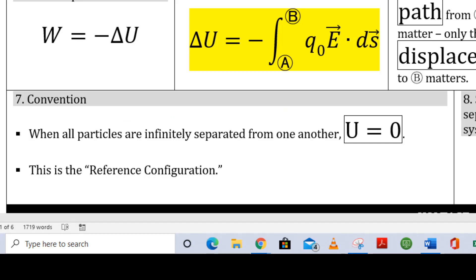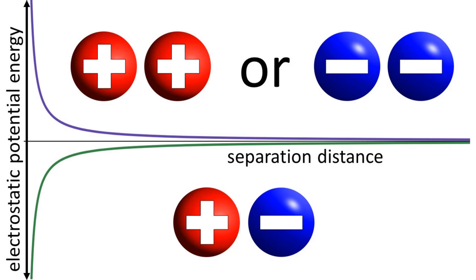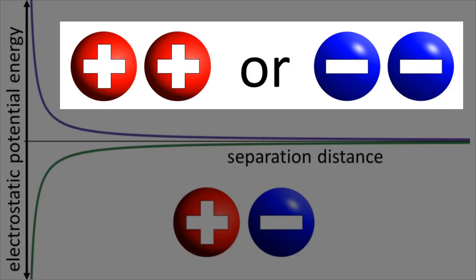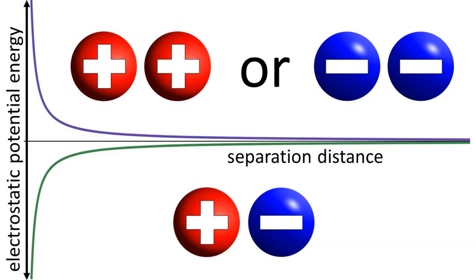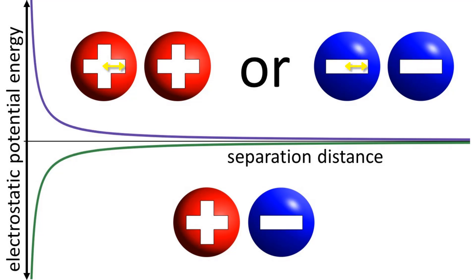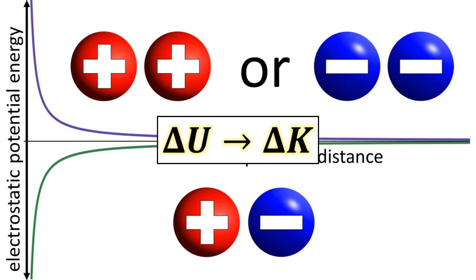Box 7 is an interesting wrinkle. When all particles are infinitely separated from one another, we say the potential energy of that situation is zero. If I have two positive charges or two negative charges right next to each other — their separation distance is small — there is going to be a tremendous amount of mutual repulsive force between them. By association, there's going to be a huge amount of electrostatic potential energy. If I'm holding these two charges very close to each other and I suddenly let go, there's going to be a very large increase in their kinetic energy. The electrostatic potential energy gets converted into kinetic energy.